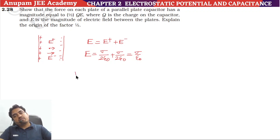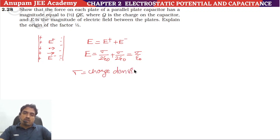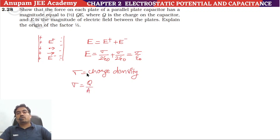Here, sigma is the charge density, which means Q divided by the area of cross-section.